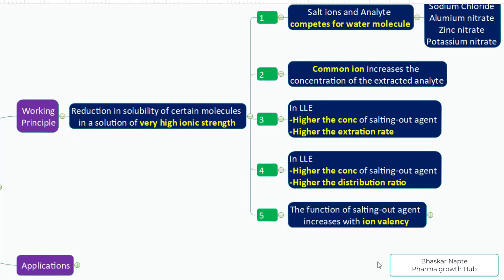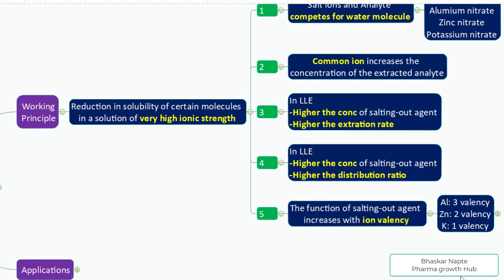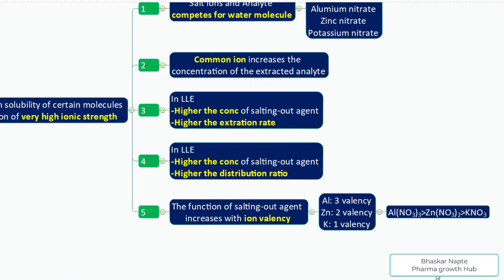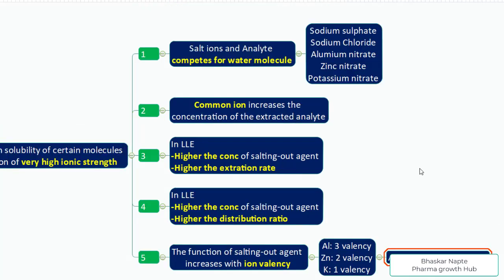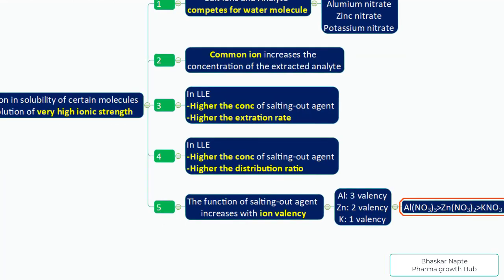The fifth point is that the function of salting out agent increases with the ion valency. The more the valency of the ion of your salting out agent, the more will be its efficiency. For example, aluminum has valency three, zinc has valency two, and potassium has valency one. So aluminum nitrate is stronger than zinc nitrate, and zinc nitrate is stronger than potassium nitrate.